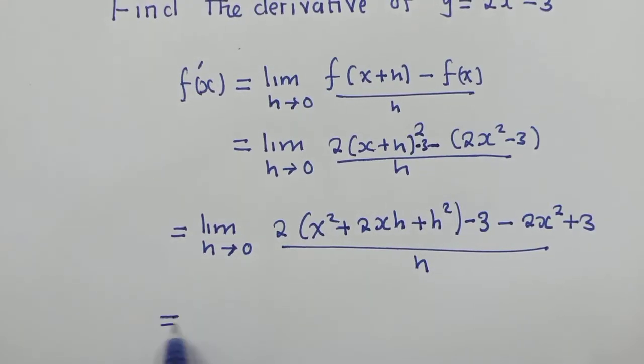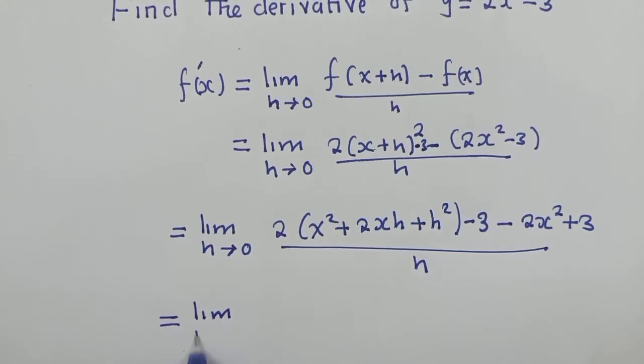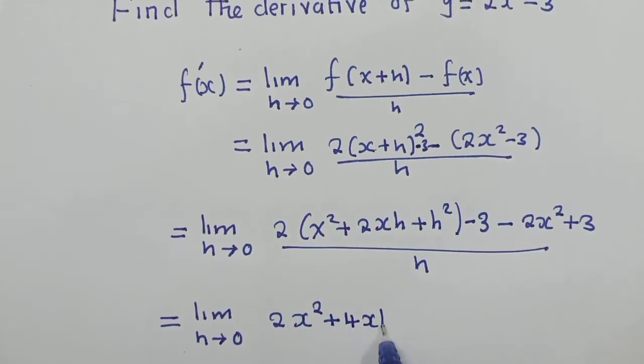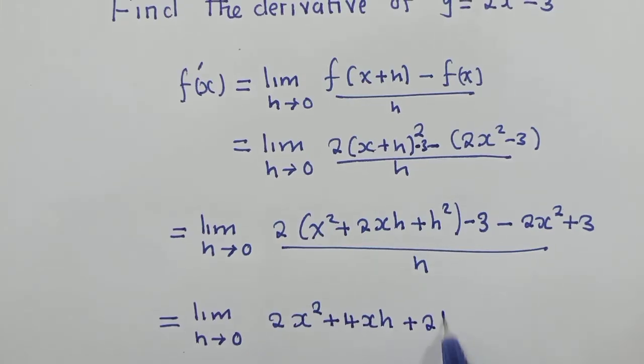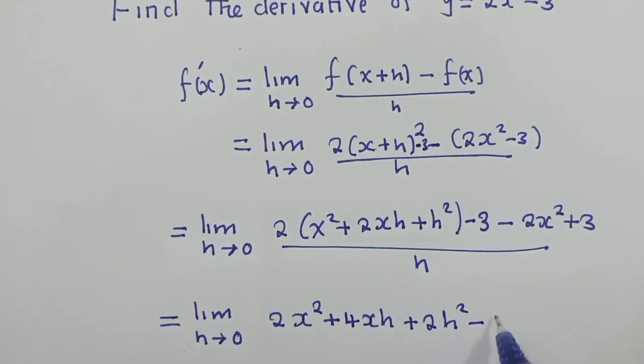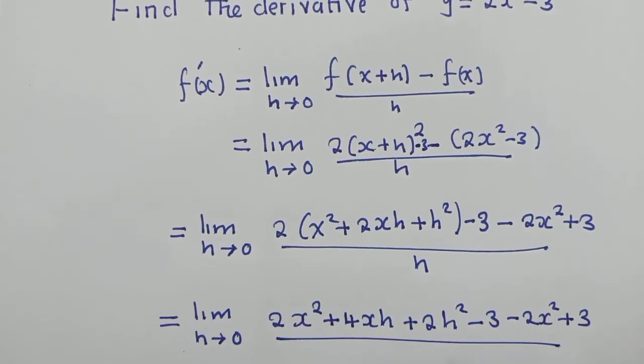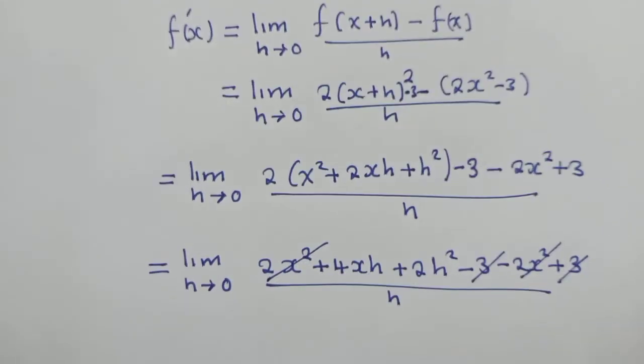Thereafter, we can say limit as h approaches 0. Okay, we distribute here. We have this. We have this right here. And 2h squared minus 3 minus 2x squared plus 3. Okay, and then we say divide by h. So this and this will cancel. This and this will also cancel.